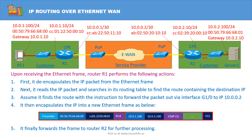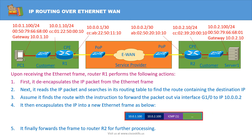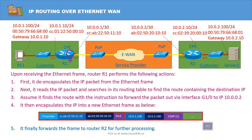Upon receiving the Ethernet frame, Router1 performs the following actions. First, it de-encapsulates the IP packet from the Ethernet frame. Next, it reads the IP packet and searches its routing table to find the route containing the destination IP. It finds the route with the instruction to forward the packet out via interface G1/0 to the next hop IP 10.0.0.2. It then encapsulates the IP into a new Ethernet frame and finally forwards the frame to Router2 for further processing.